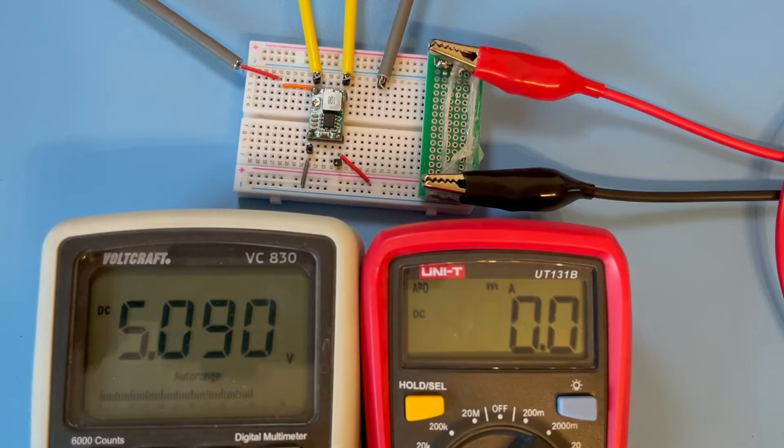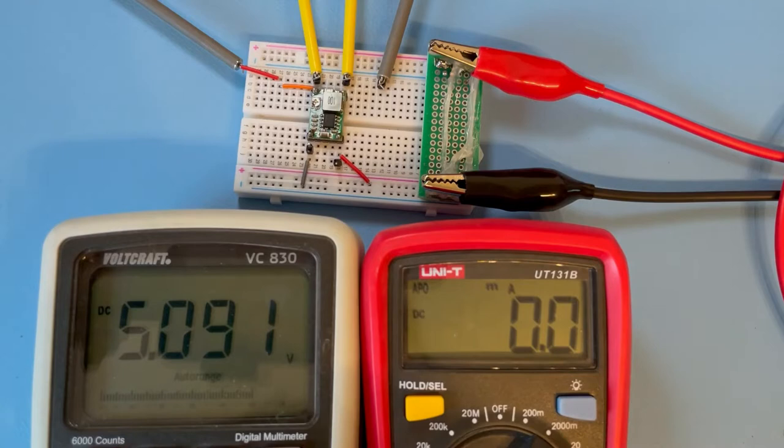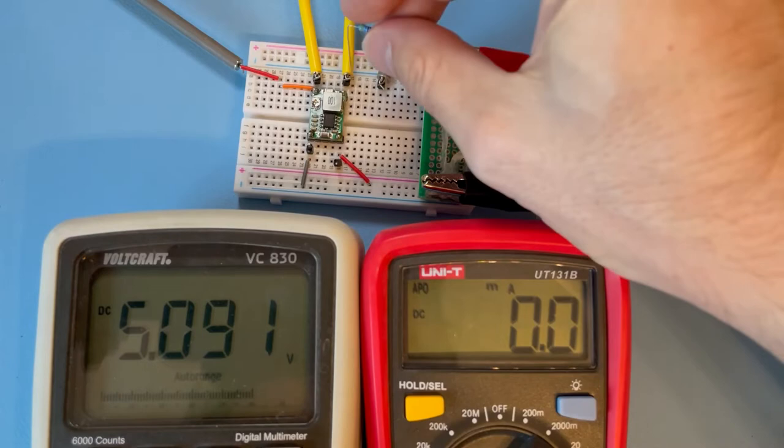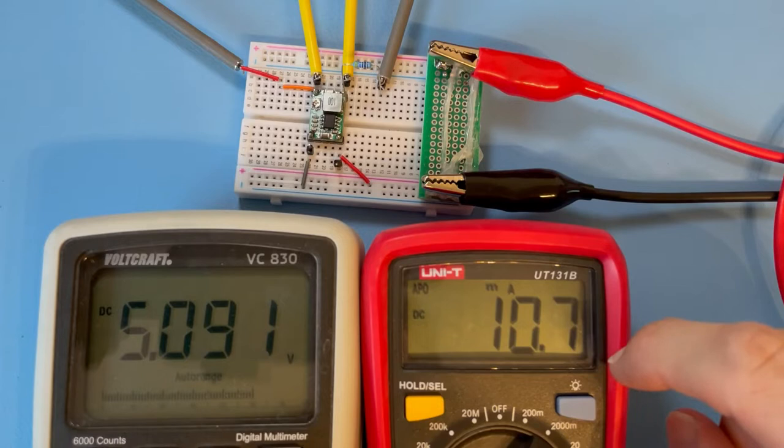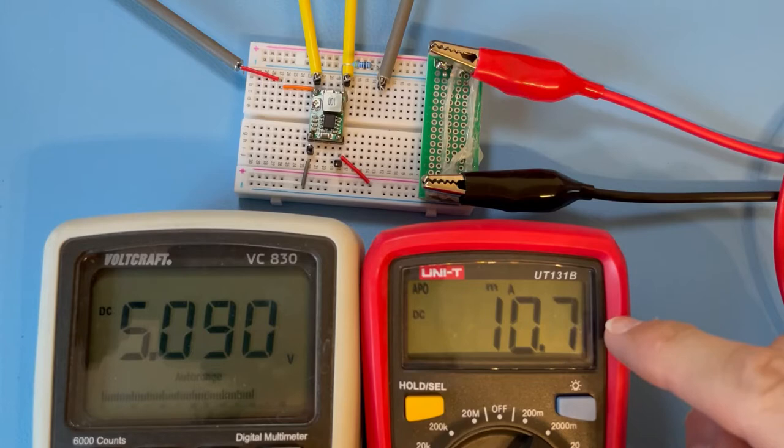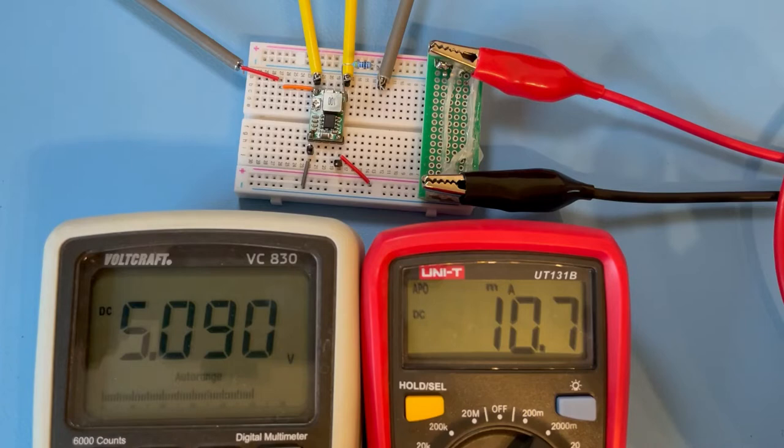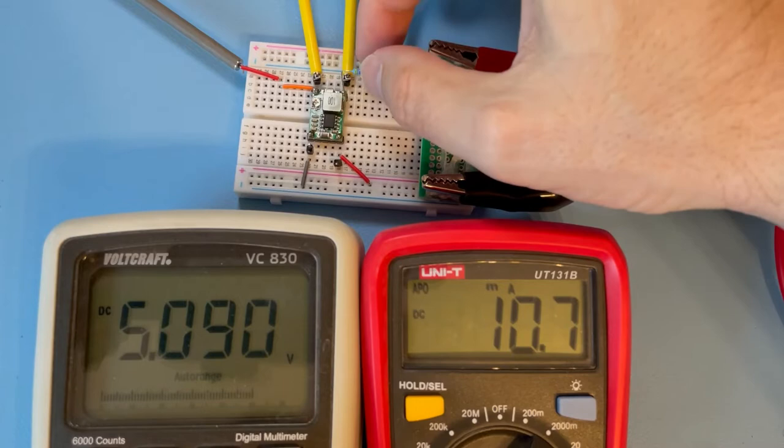Then as we lower the resistor to 470 ohms, that should give a current of around 10 milliampere. Yeah, above 10 because we have 470 or below half a kilo ohm, and stable voltage source 5.09.